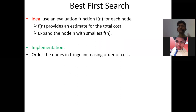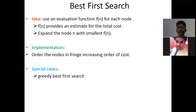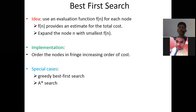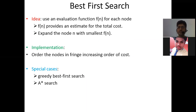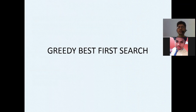There are two special cases of best-first search: Greedy best-first search, which we will discuss today, and A* (A-star) search. The core idea of best-first search is to use a heuristic function, look for the smallest heuristic value, put nodes in increasing order of cost, and then apply BFS or DFS accordingly.